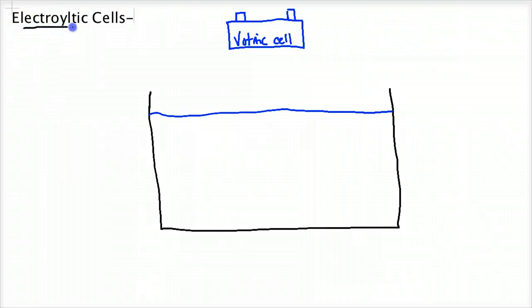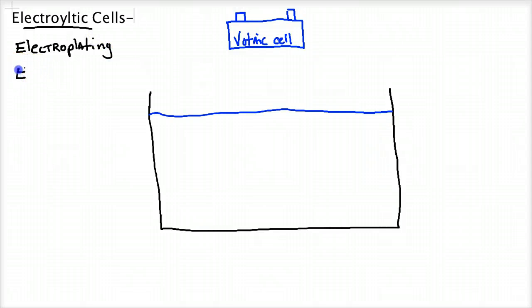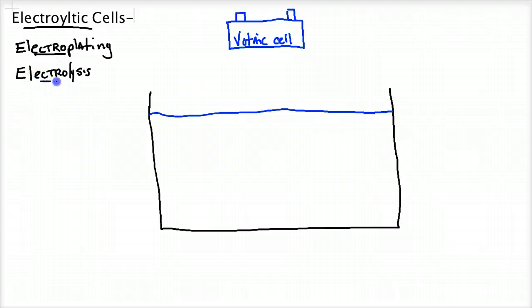A couple of other definitions or words that pop up with electrolytic cells: electroplating and electrolysis. These two types of setups require energy to force a non-spontaneous redox reaction to occur.